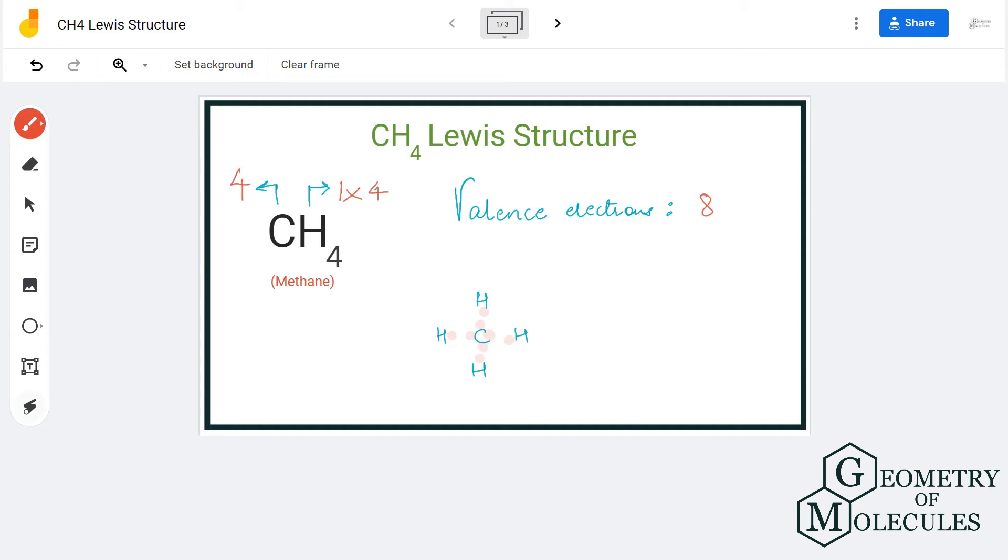Now you see that carbon here has eight valence electrons in its outer shell because it is sharing one valence electron of hydrogen. And hydrogen has two valence electrons in its outer shell because it has shared one valence electron of carbon atom.